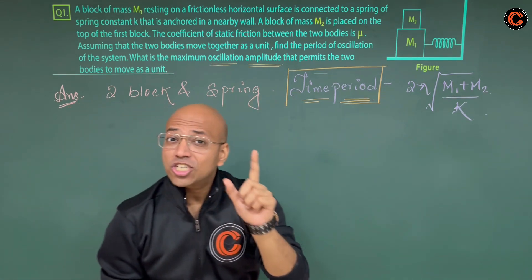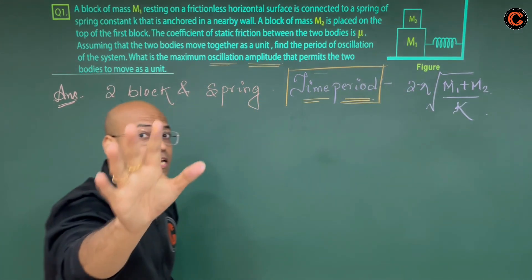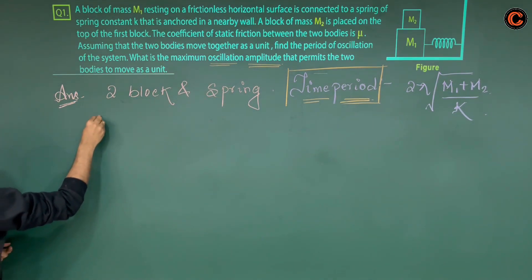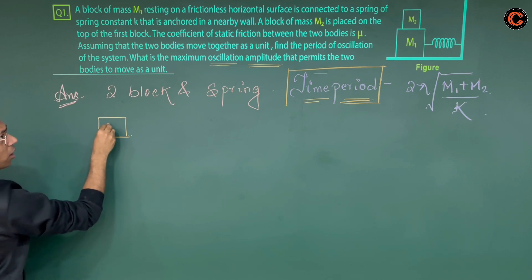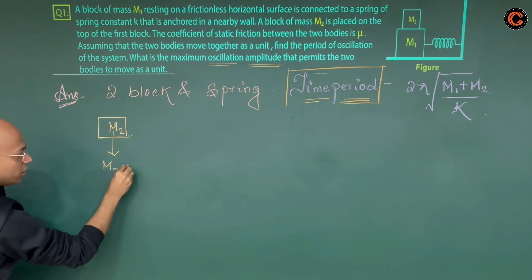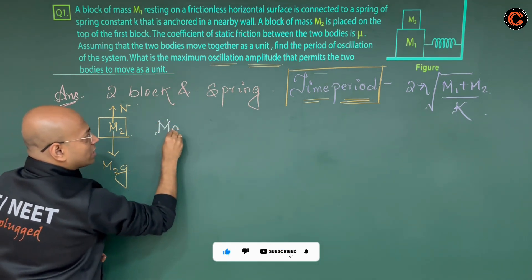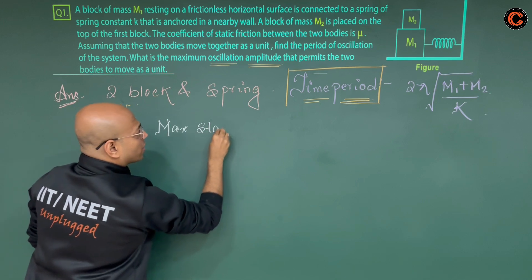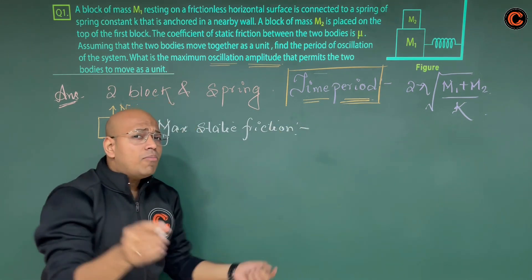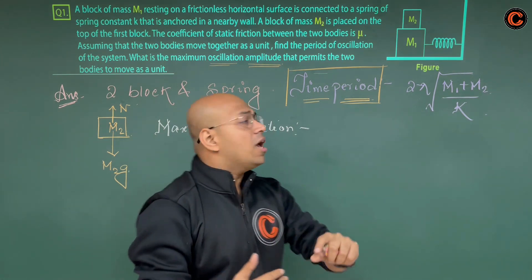Where is friction? The friction is between the ground and the second block. For the small block M2, we draw a free body diagram: M2g downward, normal reaction N upward. The maximum static friction is μ times N, which equals μM2g.